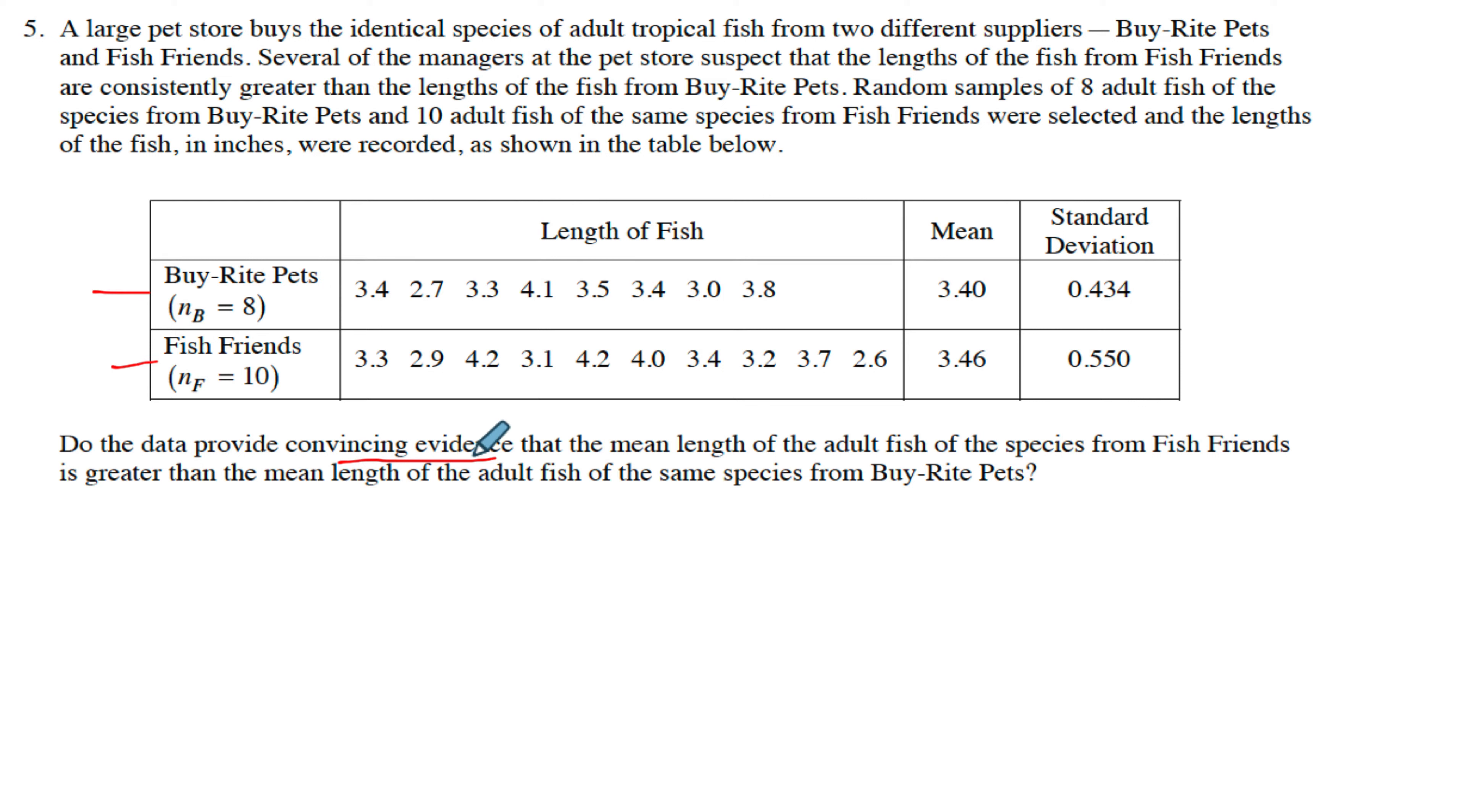Now, when I look at this, we're dealing with means, so right there it's a t-test. We've got to figure out whether it's matched pairs or two sample. This one's so easy because they're not even the same. How is this going to be matched pairs? You have eight in this one and ten. There's nothing to match. These are independent of each other, so this is going to be a two-sample t-test.